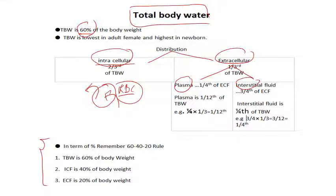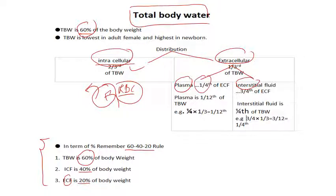Now let's come to the 60-40-20 rule. 60 means total body water is 60 percent of body weight. Of this, intracellular fluid is 40 percent. The remaining 20 percent is in the extracellular compartment. In other terms: two-thirds is intracellular and one-third is extracellular. Of this one-third extracellular, one-fourth is plasma and three-fourths is interstitial fluid.